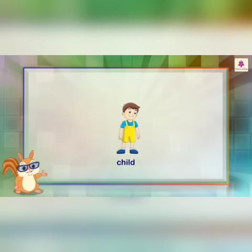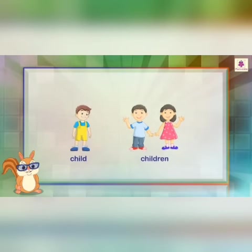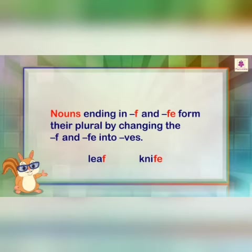For example, child — one child — plural: children. There is no fixed rule to follow for this plural form; we just have to remember how to convert it. These are irregular plurals.